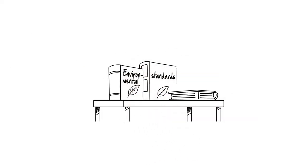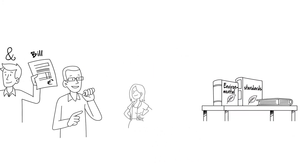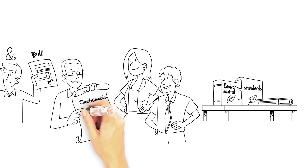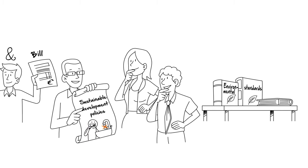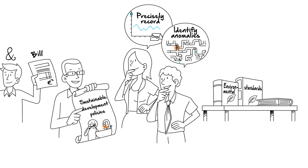New environmental standards are prompting suppliers to adopt sustainable development policies, mostly to avoid waste. So they are looking for a solution that allows them to precisely record consumption while identifying any anomalies in how the distribution network is functioning.